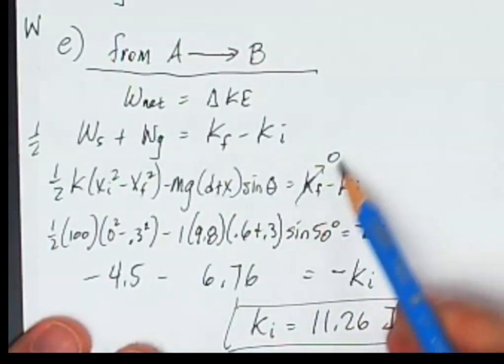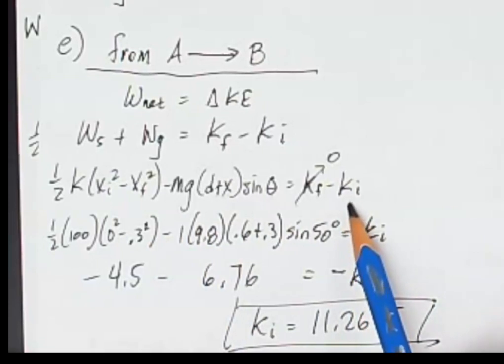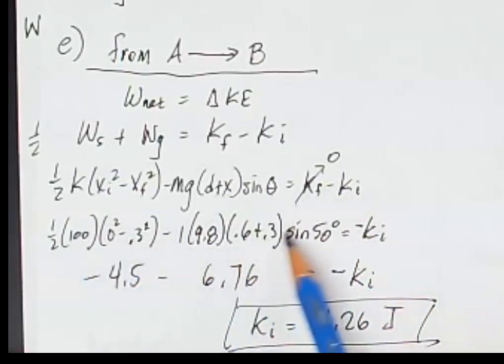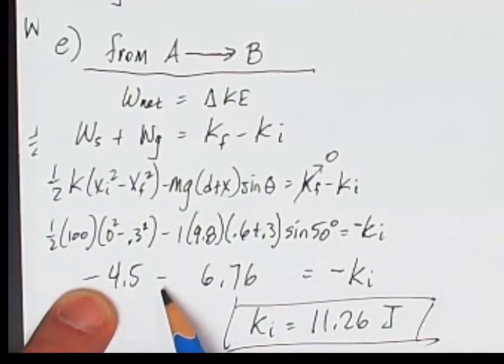It stops at the highest point so that means the final kinetic energy is zero and down here at the bottom is where the initial kinetic energy is and so that's what I'm trying to find. Plug in all the numbers and solve to come up with my initial kinetic energy of 11.26 joules. You wouldn't get the right answer if you did not know that the work by the gravitational force and the work done by the spring are both negative.